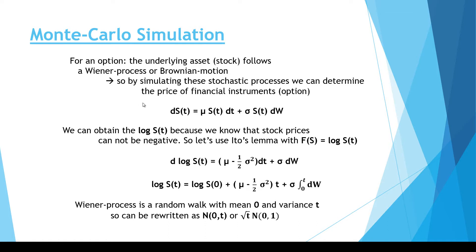The standard model is that the underlying stock price is a stochastic process with some deterministic part and some stochastic part. We can obtain the logarithm of the stock price because we know for certain that stock prices cannot be negative — they cannot be smaller than zero. So let's use Ito's lemma with the f function equal to logarithm of S.